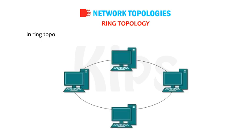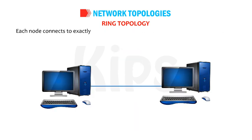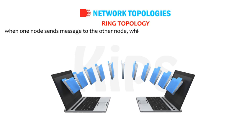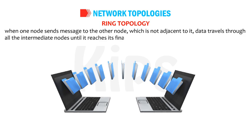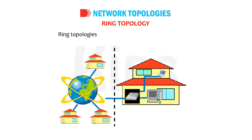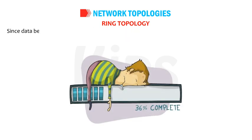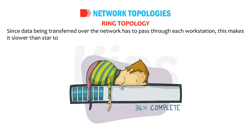Ring topology — all nodes in the network are connected in a circular manner. Each node connects to exactly two other nodes, forming a single continuous pathway for signals. When one node sends a message to a non-adjacent node, data travels through all intermediate nodes until it reaches its final destination. Ring topologies are used in both LAN and WAN setups. The main disadvantage is that if one workstation goes down, the entire network gets affected. Since data passes through each workstation, this makes it slower than star topology.